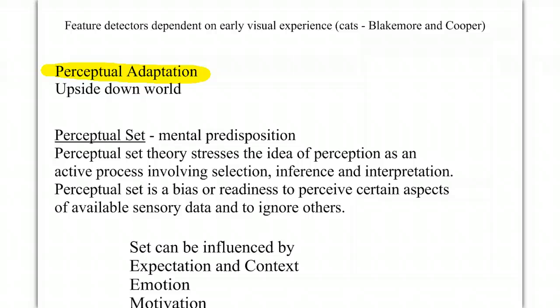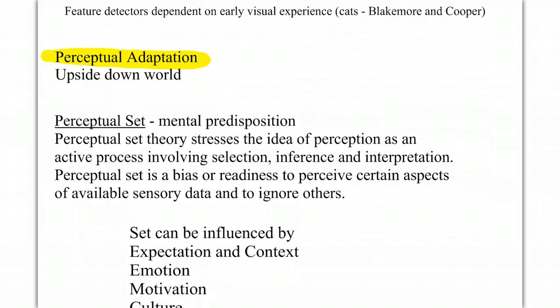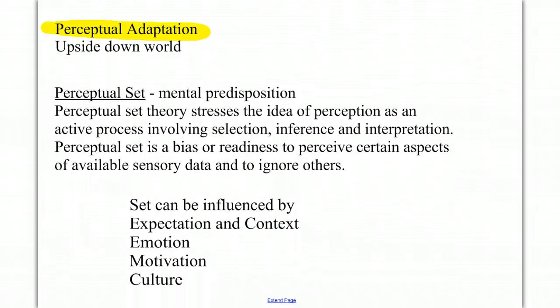It's based on what your expectation was. It's also based on things like culture and even emotion. This perceptual set, or mental predisposition, can bias us towards how we experience an event, or make us ready to perceive it in a certain way. So we'll pay attention to certain sensory inputs, but ignore others.